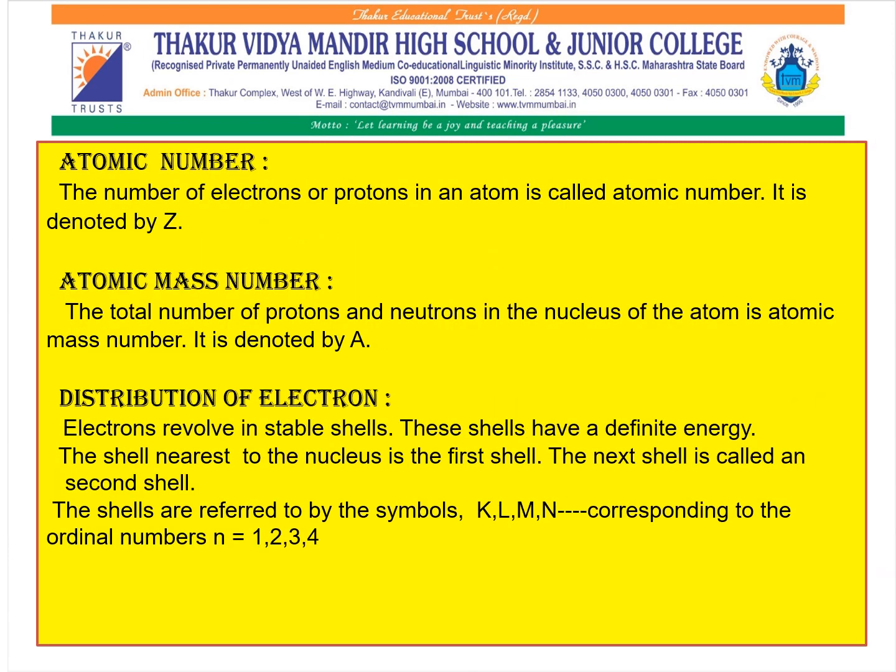The number of electrons or protons in an atom is called the atomic number, and this atomic number is denoted by the letter Z. The total number of protons and neutrons in the nucleus is referred to as the atomic mass number and is denoted by the letter A.